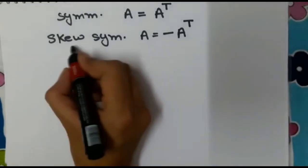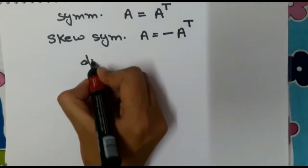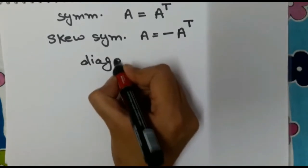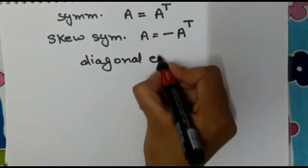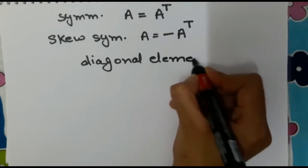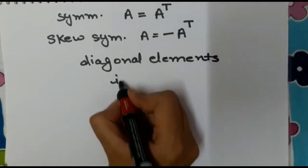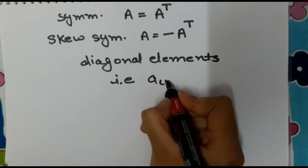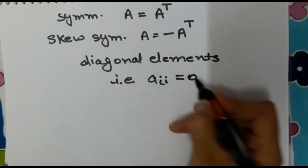In skew symmetric matrix, diagonal elements, that is A_ii, equal 0.